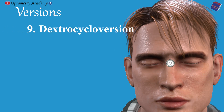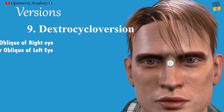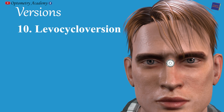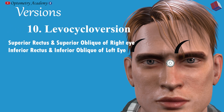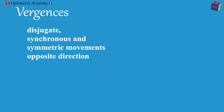Dextrocycloversion: when the eyes rotate along the anterior-posterior axis so that the superior pole rotates to the right side, brought about by a simultaneous contraction of the inferior rectus and inferior oblique of the right eye, and the superior rectus and superior oblique of the left eye. Levocycloversion is the movement just opposite to dextrocycloversion.